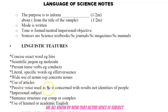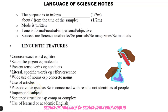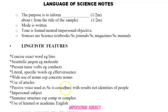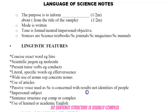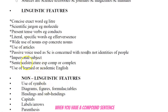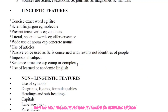In passive voice, the object comes first, then the verb, then the subject — because language of science focuses on results. There is also the use of impersonal subject. Moving on to sentence structure: sentences are usually compound or complex. Compound sentences provide more information; complex sentences add extra detail beyond what is needed, because precision is critical in language of science. The last linguistic feature is learned or academic English. When we look at samples, we will go through all these features and identify them.